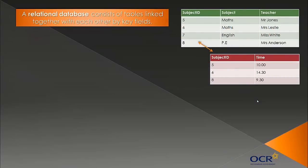First, let's define what a relational database is. A relational database consists of tables linked together with each other by key fields. We're going to look at key fields in more detail in a couple of minutes' time. This is a relational database - they're linked together by the subject ID column, which is the key field. We've got two tables here. This would still technically be a relational database because it's linked together by the subject ID key field.